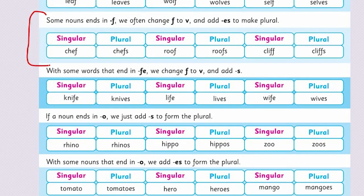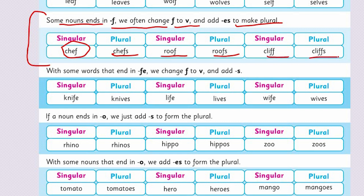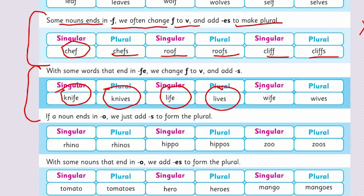Now look at another way. Some nouns ending in F — we just add S and do not change F to VES. Like: chef → chefs, roof → roofs, cliff → cliffs. And with some words that end in FE, we change F to V and add S. Like: knife → knives, life → lives, wife → wives.